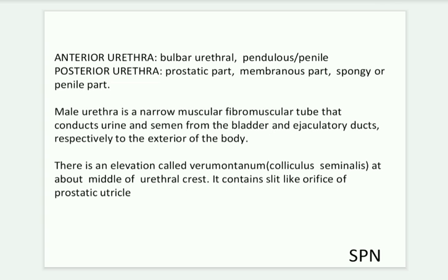The male urethra is divided into two parts: anteriorly and posteriorly. The anterior urethra includes the bulbar urethral and pendulous or penile parts. The posterior urethra includes the prostatic part, membranous part, and spongy or penile part. There is an elevation called the verumontanum or colliculus seminalis.